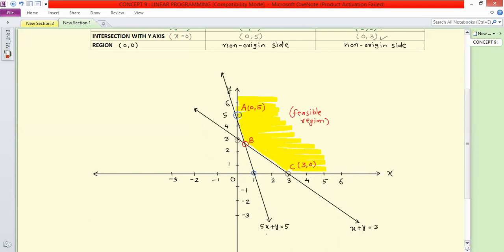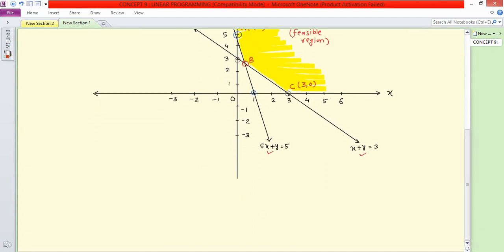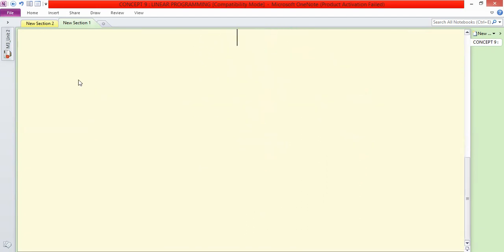A and C coordinates are already known. We need to find B's coordinates. To find B's coordinates, we need to solve these two equations. The first equation is 5x plus y equal to 5. The second equation is x plus y equal to 3. Simply subtract these equations. y will cancel. 5x minus x gives 4x equal to 5 minus 3, which is 2. That means x's value is 2 upon 4, which equals 1 by 2.